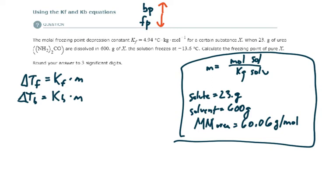But here, we are given the molal freezing point depression constant for a certain substance that's going to end up being our solvent. So I'm going to write it here in our givens. It's 4.94.